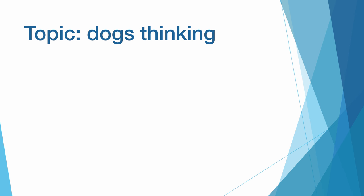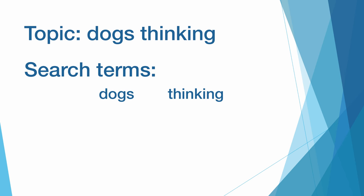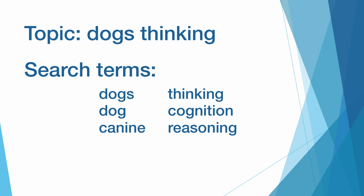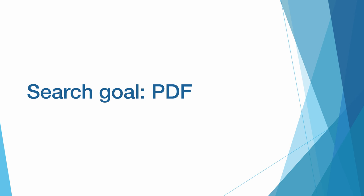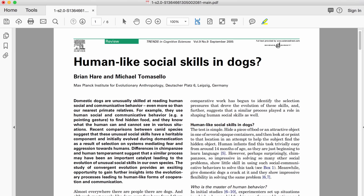My topic is how dogs think and understand the world. As with the beginning of any search, I want to create a list of potential search terms by coming up with synonyms for my original terms. I also set as my goal for this search reaching a PDF of a research article. PDFs of research articles are really useful because we can download them to our computers and add our own notes and highlights to them as we read. So I always try to find the PDF of a study I want to read.